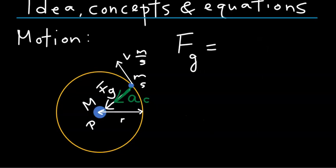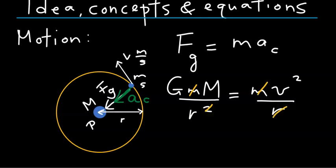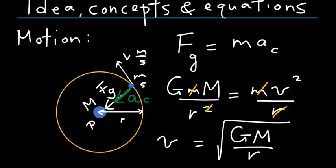Thus, the gravitational force provides the centripetal force, which is m times v squared over r. Since gravitational force equals G times the product of masses over r squared, and that equals m times v squared over r, the little m cancels and one of the r's cancels, giving us an expression for the orbital speed v in terms of the orbit radius r.